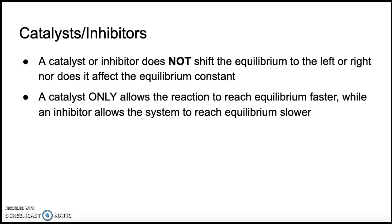The last thing to talk about is catalysts and inhibitors. When you add a catalyst, which speeds up your reaction, or an inhibitor, which slows it down, those are not going to shift the equilibrium to the left or the right, and they will not affect the equilibrium constant. Remember, if you change the temperature of your reaction you can change the equilibrium constant, but a catalyst only allows your system to get to equilibrium faster — that's a kinetics thing, unrelated to where the equilibrium lies. The same applies to an inhibitor: it slows things down but doesn't change the equilibrium position.